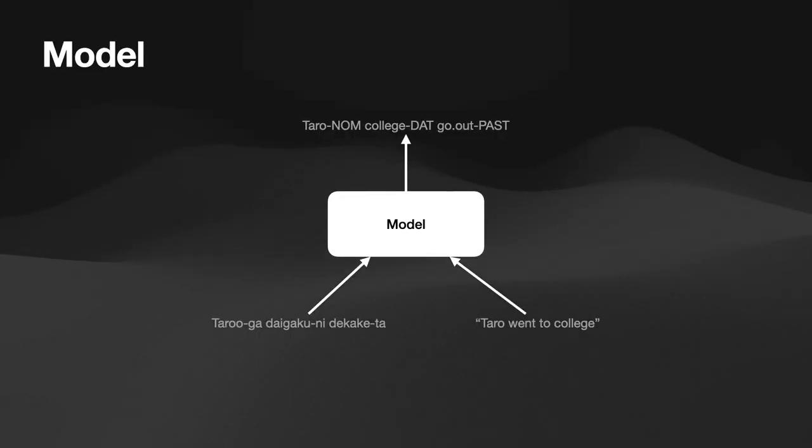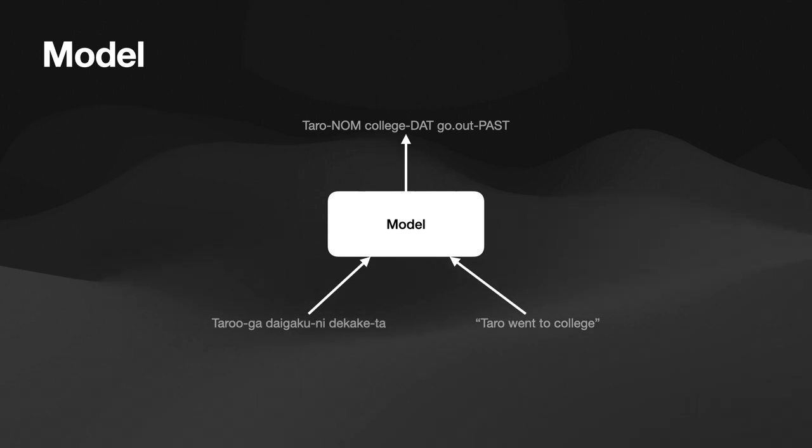A solution is to create a system that automates IGT generation to aid in the documentation process. Specifically, our goal is to build a model that learns to generate the gloss line of IGT given the transcription and translation line.